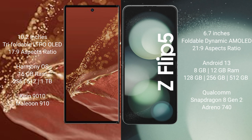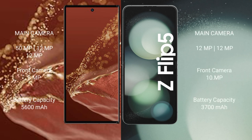The Huawei Mate XT Ultimate comes with 16 GB RAM, and 256 GB, 512 GB, or 1 TB internal storage, powered by the Kirin 9010 processor with GPU 910. The Samsung Galaxy Z Flip 5 comes with 8 GB or 12 GB RAM and 256 GB or 512 GB internal storage, powered by the Qualcomm Snapdragon 8 Gen 2 processor.